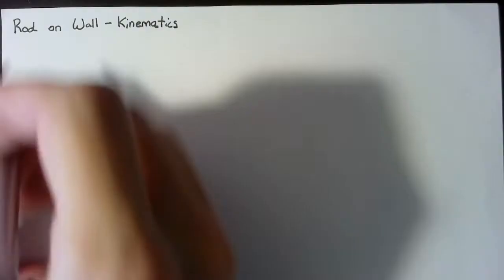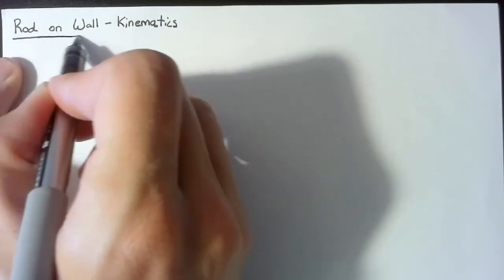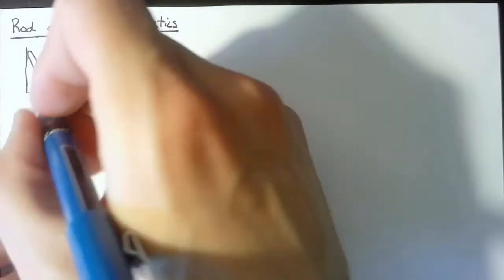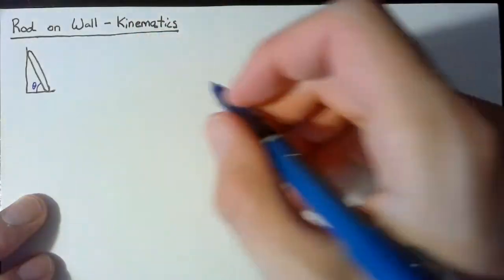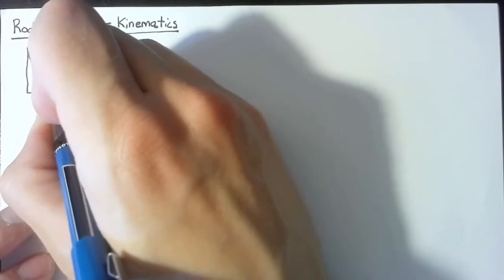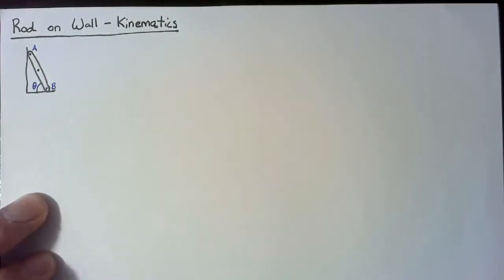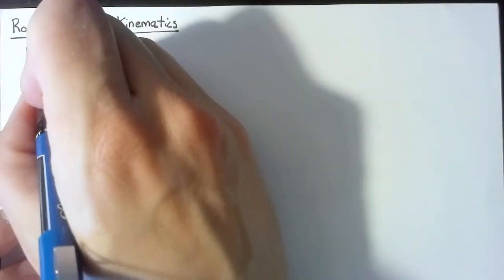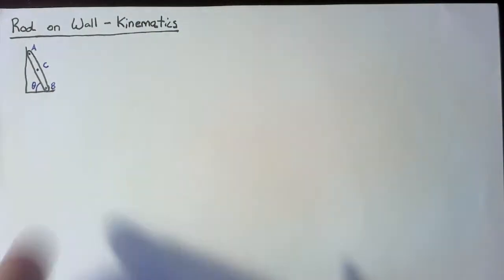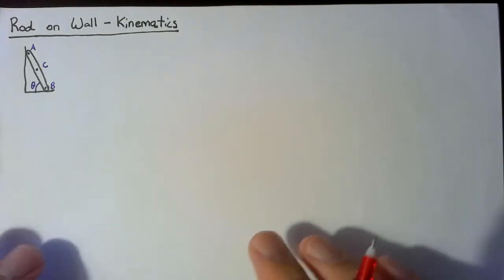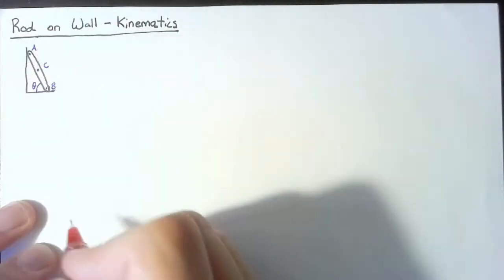So we're not dealing with any forces in this video — we're only looking at how this rod moves. I'm going to start off by drawing the rod, and this is going to be given an angle with the floor which we're going to call theta. In order to analyze this, I need to give various points some names. I'm going to name the top point A, the bottom point B, and the center point — the center of mass — I'm going to call that point C.